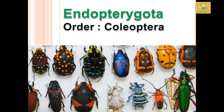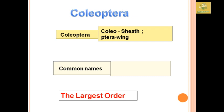In this video we are going to see about fundamentals of entomology, covering the Coleoptera order. The name Coleoptera comes from 'coleo' meaning sheath and 'ptera' meaning wings, so the sheath-winged insects come under this order. It is said to be the largest order in insect classification, and the common names are bugs, beetles, and weevils.